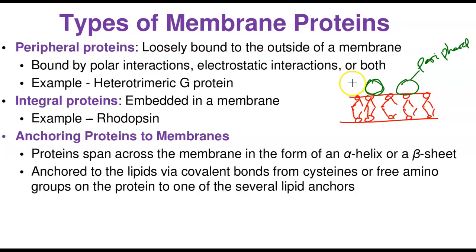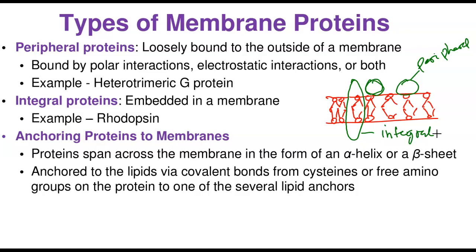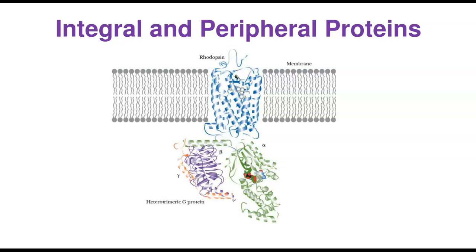Integral proteins span all the way through the width of the membrane — that is why we call them integral proteins. There is also a less common type: anchoric proteins, which form alpha-helices and beta-pleated sheets and help in anchoring lipids via covalent bonds from cysteines or free amino acid groups to sulfuric lipid anchors. The two main types we focus on are peripheral proteins and integral proteins, which are essential to understanding the true structure of the plasma membrane.